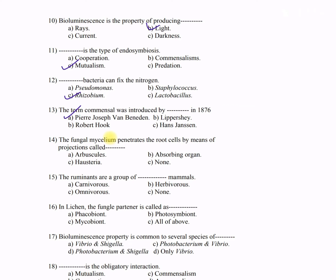Question 14: The fungal mycelium penetrates the root cells by means of projections called — A) arbuscals, B) absorbing organ, C) hysteria, D) none of the above. The correct answer is A — arbuscals. These are projections that appear tree-like within the cell.